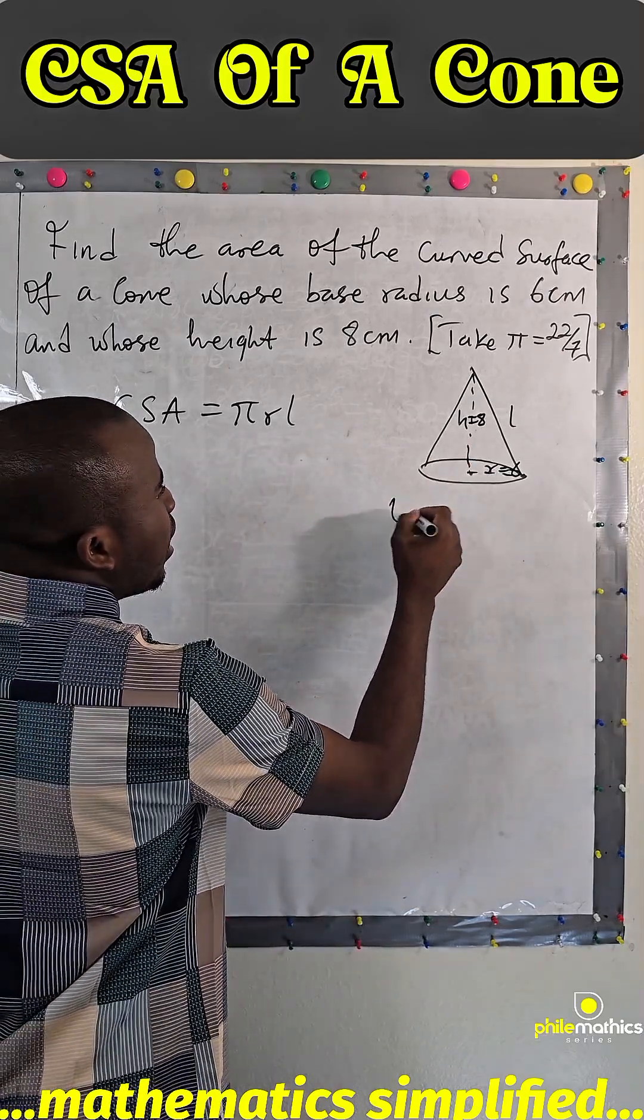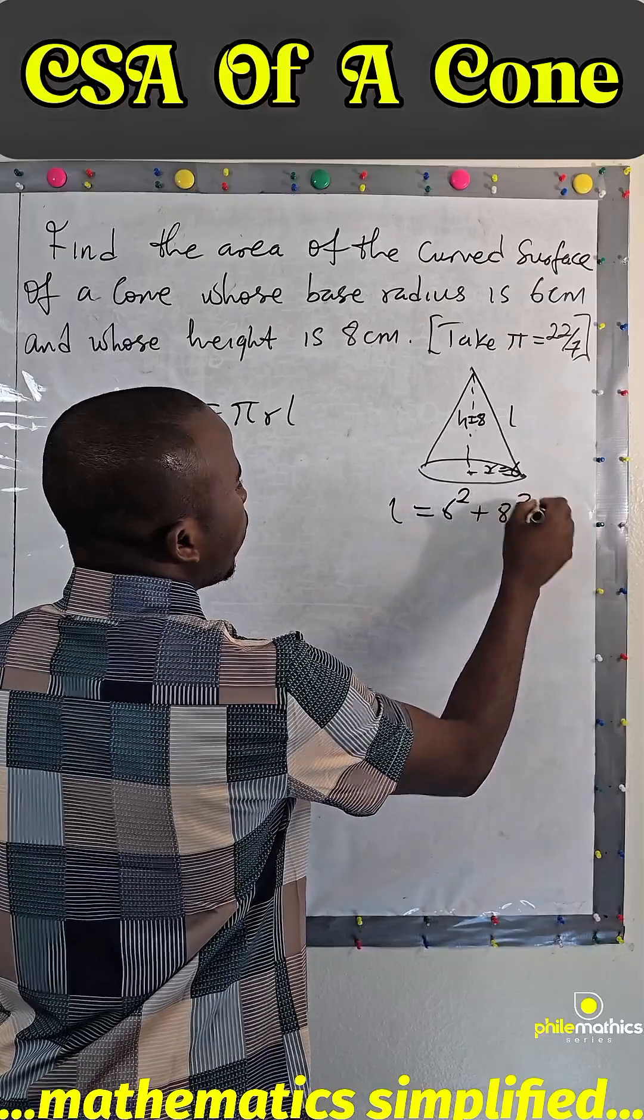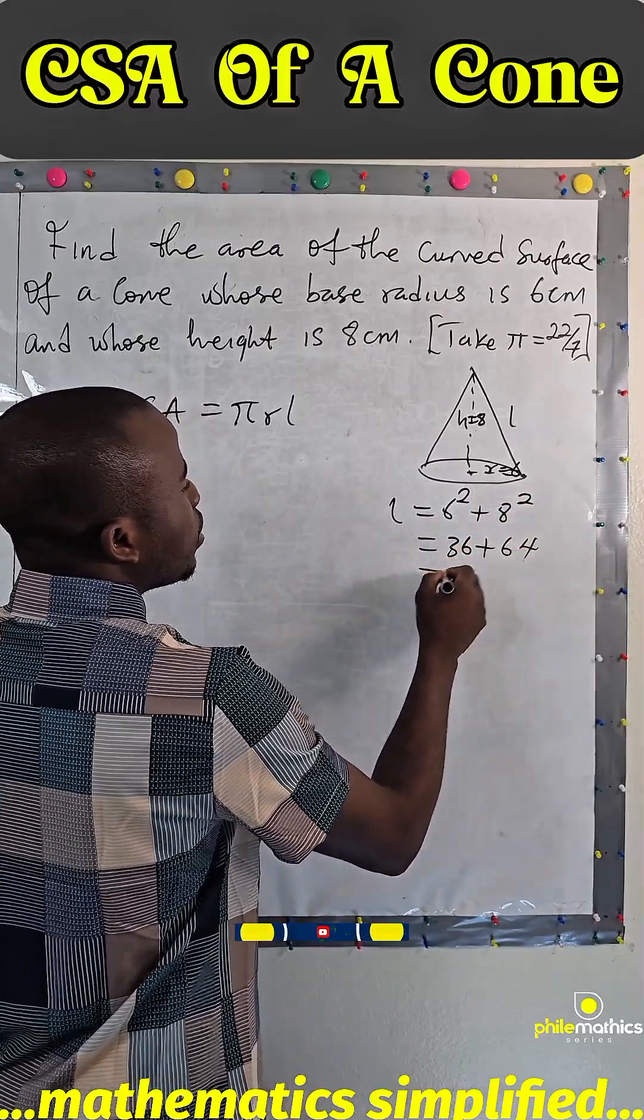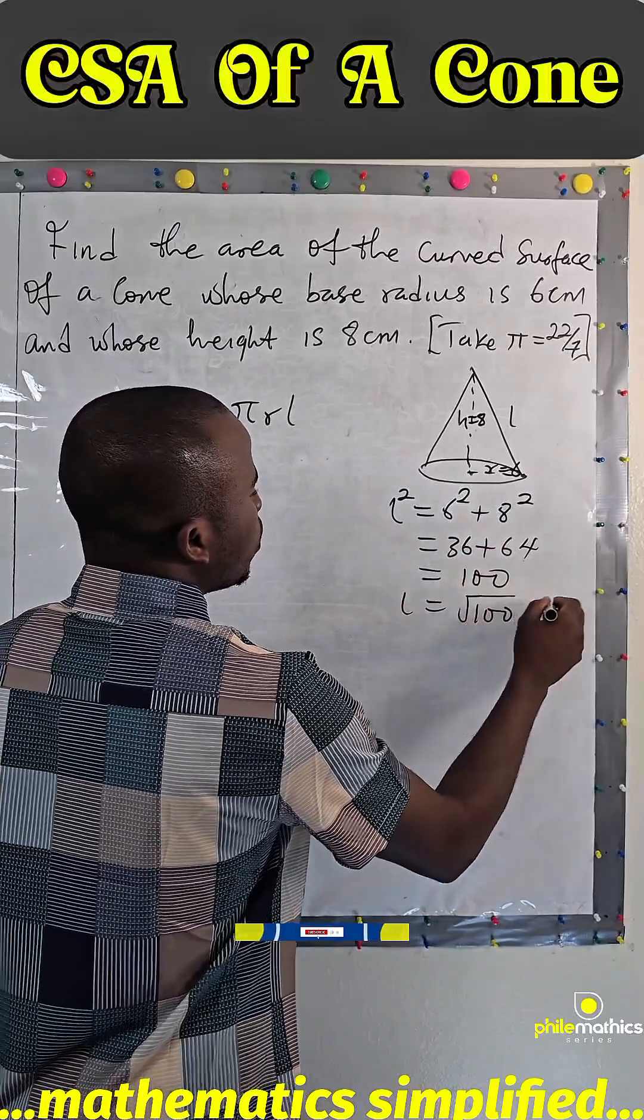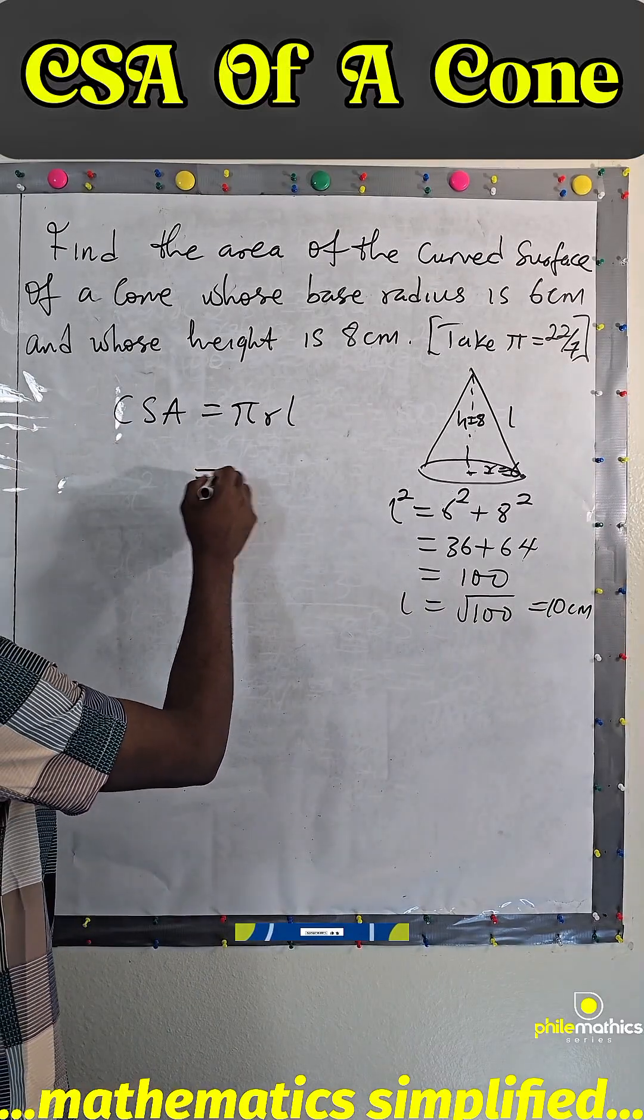But if you want to use Pythagorean theorem, we know that l² = 6² + 8². This is 36 + 64, and this is 100, so that l will be square root of 100, which is 10 cm.